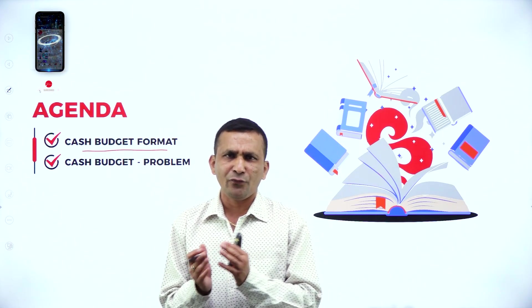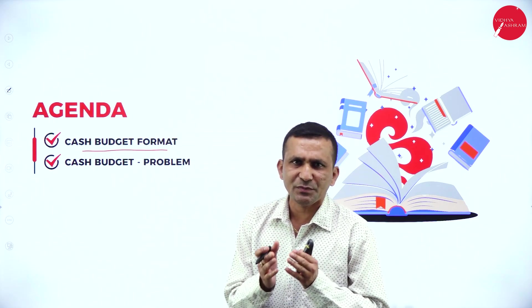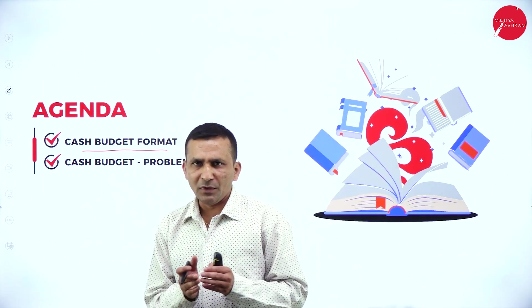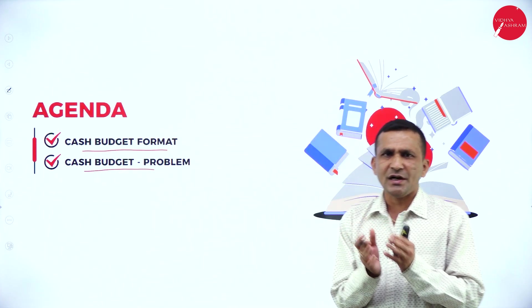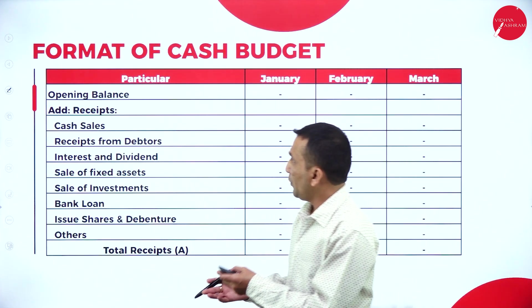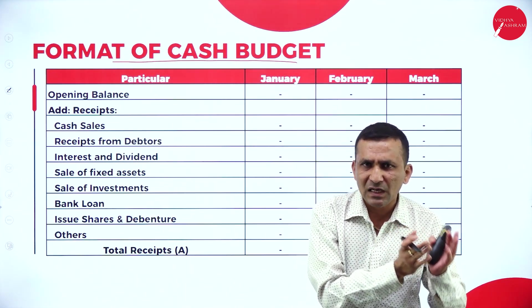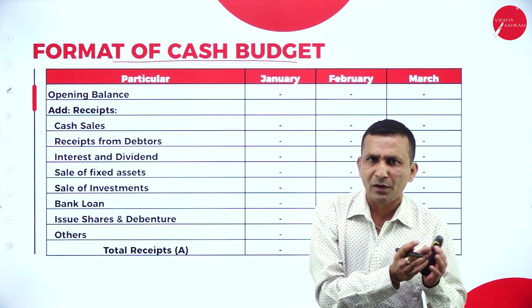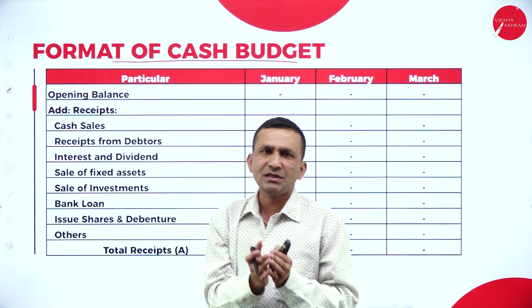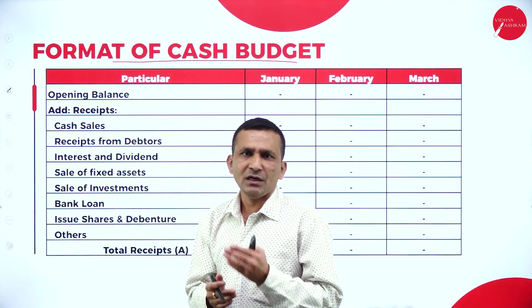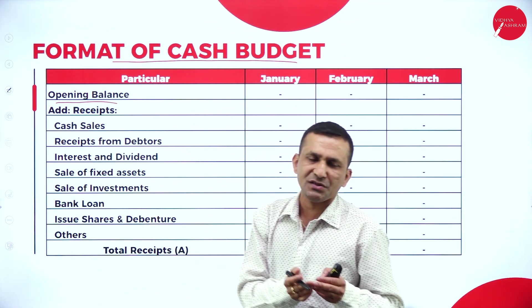There are four types of methods we identified in the last session. We will focus on the receipt and payment method, which is common and universally accepted, along with a few problems related to the cash budget. The format of the cash budget: first, whatever closing balance was prepared last month or last year is given. So when you are preparing for the second time, you need to consider the opening balance which is given in the question.